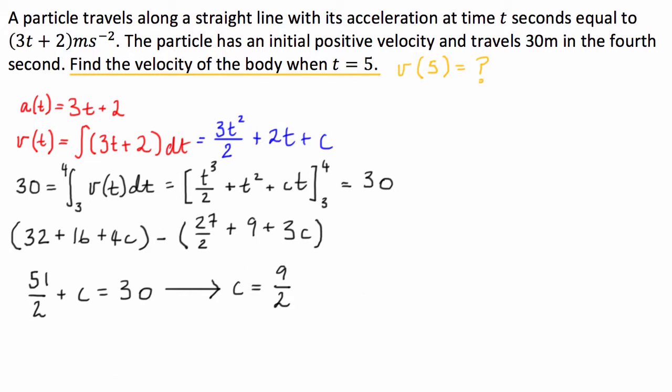So from here we can then write down what our velocity equation is going to be. We can say, well, v of t is going to be equal to 3t squared divided by 2, plus 2t, plus 9 over 2. Now this fits with our last constraint, this initial positive velocity, because when t is 0, the velocity will be 9 over 2, which is positive.